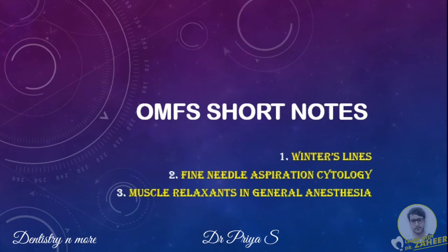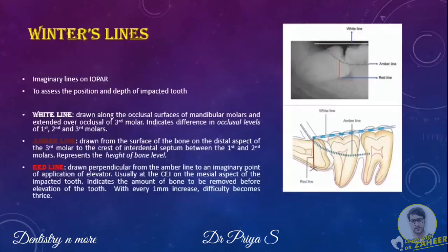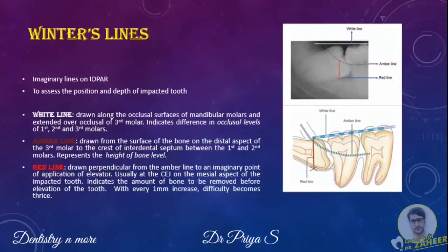In this video and the videos to follow, we shall be discussing some of the frequently asked OMFS short note questions in university exams. The first short note question is Winter's lines. Winter's lines are three imaginary lines drawn on the radiograph, specifically the intraoral periapical radiograph. These lines determine the position and depth of an impacted third molar. This method was first described by George Winter, and the lines are described as white, amber, and red lines.